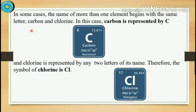In some cases, the names of more than one element begin with the same letter: carbon and chlorine. In this case, carbon is represented by C and chlorine is represented by any two letters of its name. Therefore, the symbol of chlorine is Cl.